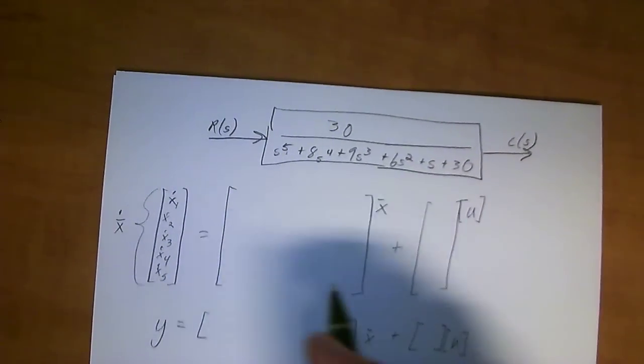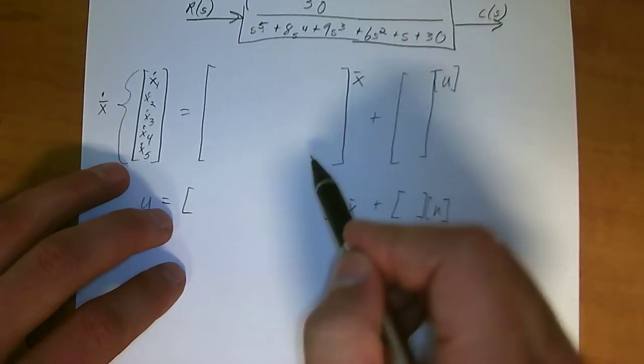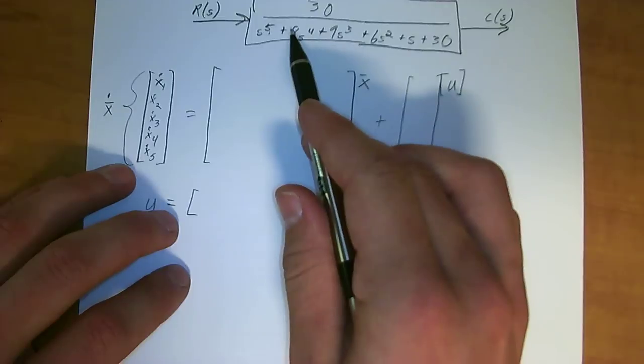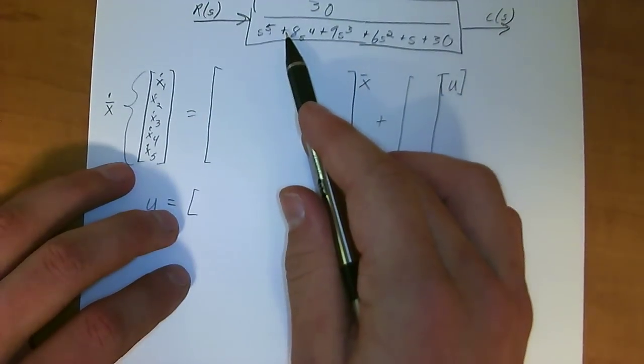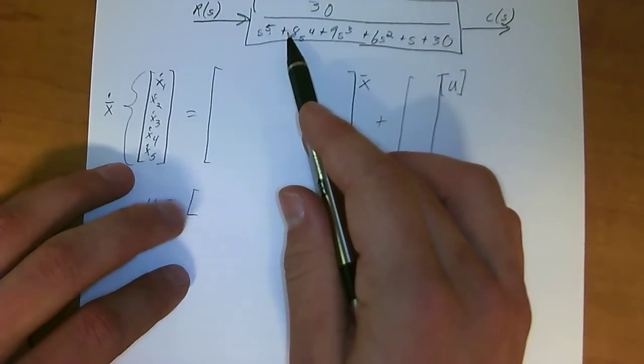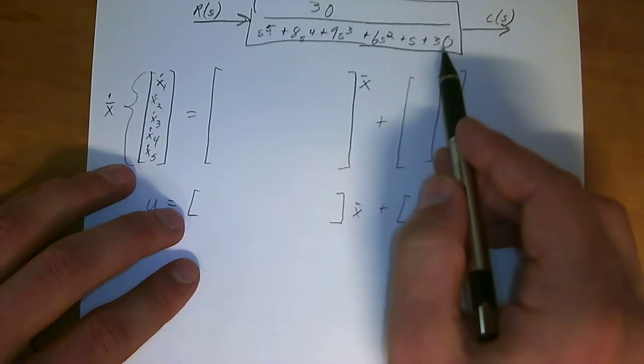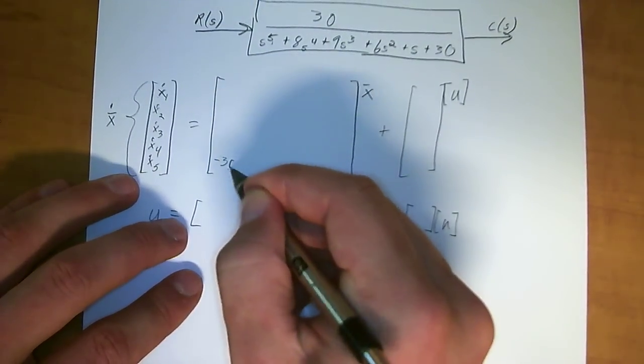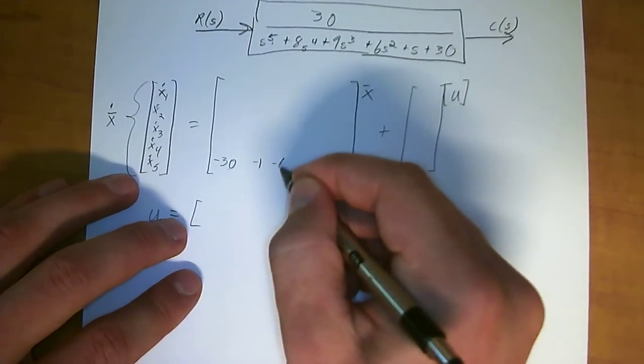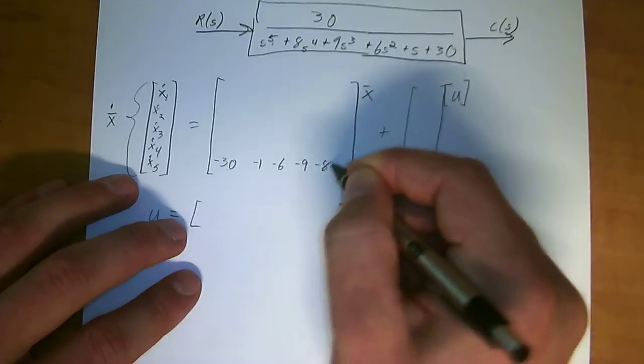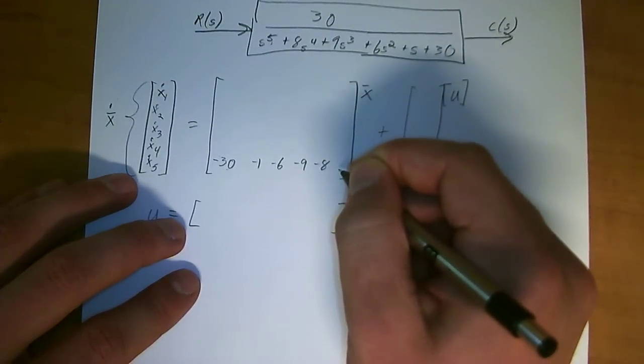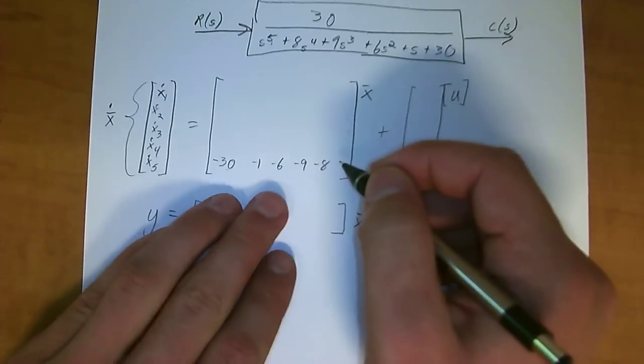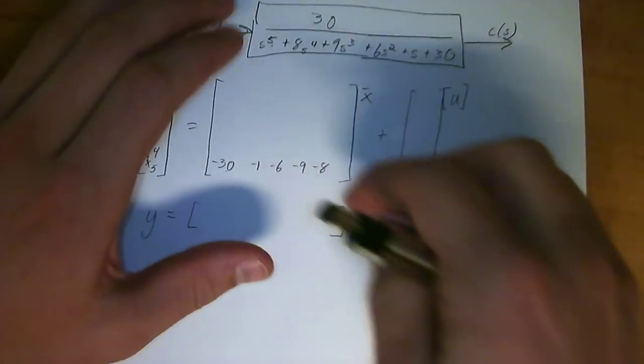So in order to put this in a variable form, what you basically do is the bottom row of this matrix is going to be the reverse order of this transfer function multiplied by negative 1. You take the first one that goes here, the second one goes here, and so on. So we've got negative 30, negative 1, negative 6, negative 9, negative 8.